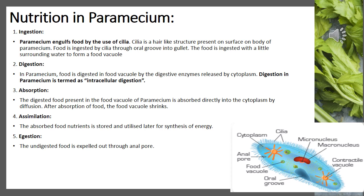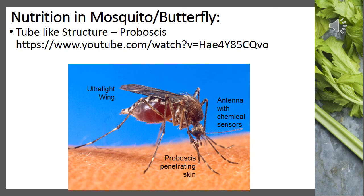Digestion in paramecium is termed intracellular digestion. In the third step, absorption, the digested food present in the food vacuole is absorbed directly into the cytoplasm by the process of diffusion. After absorption, the food vacuole shrinks and the nutrients are transported throughout the body and utilized for synthesis of energy. The last step is egestion, where undigested food is expelled out through the anal pore.